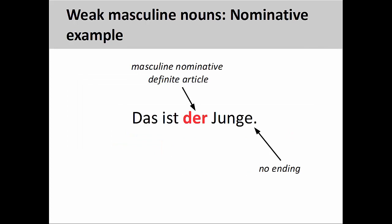A characteristic of a weak masculine noun is the -en or -n ending that the noun adds in every case except the nominative.